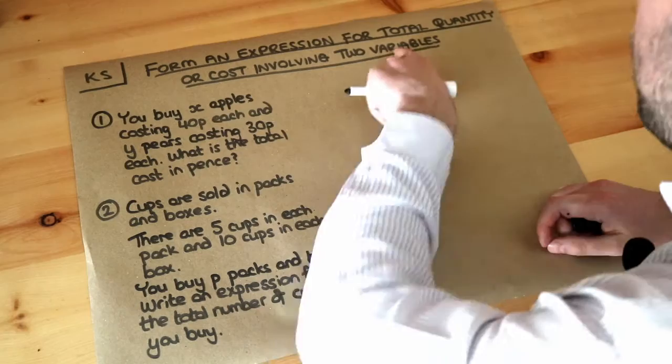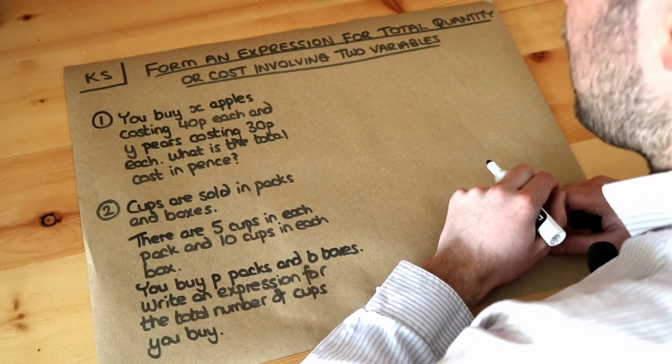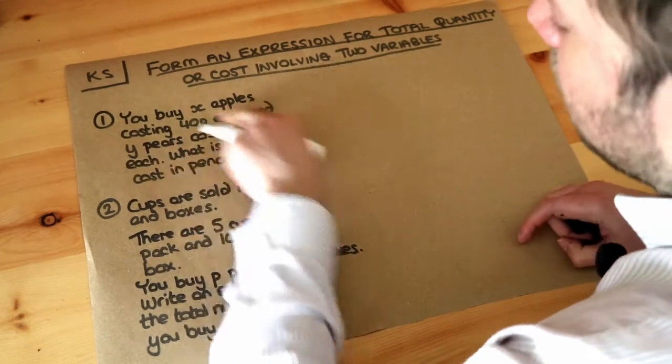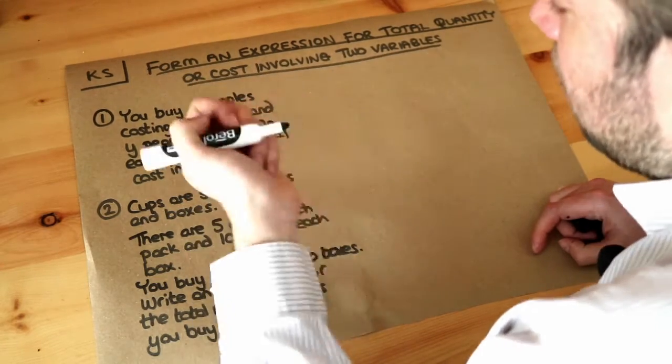We've seen before that variables are just when we use letters to represent unknown values. So we've got x apples, we don't know how many apples we've got, and in fact in this question we're never going to know how many apples there are. We're just keeping it as x apples because we don't know.